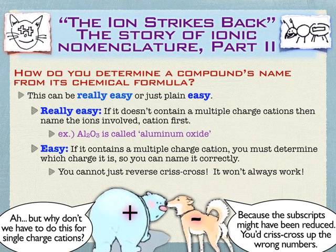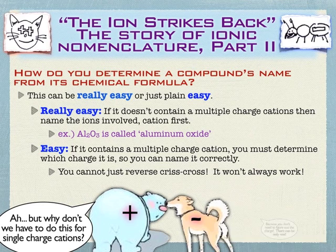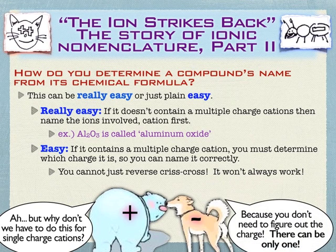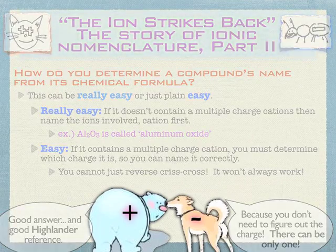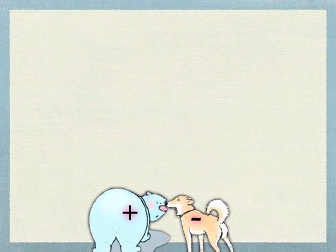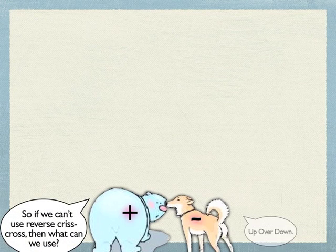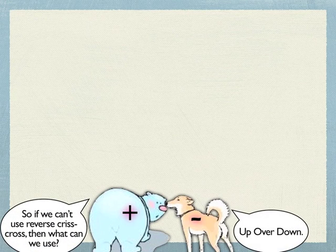Remember, we don't have to do this for single-charge cations because there's only one charge — just as the periodic table predicts. So you can figure out the charge on the cation and it'll be exactly what the periodic table predicted. But if it is a multiple-charge cation, let's figure out how we handle that.